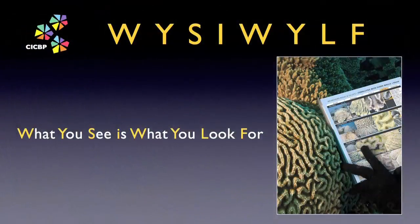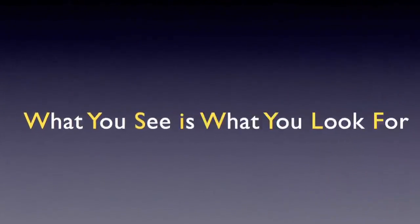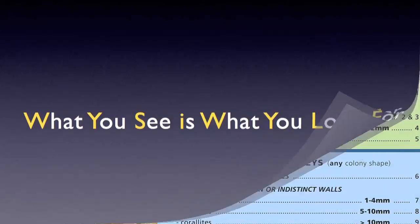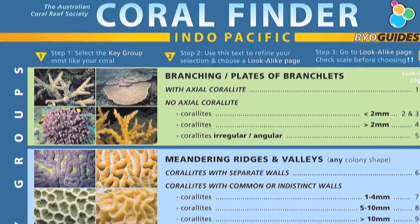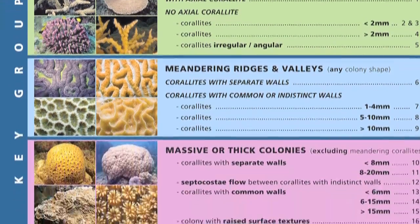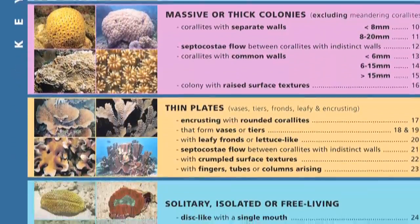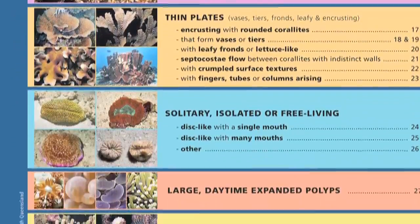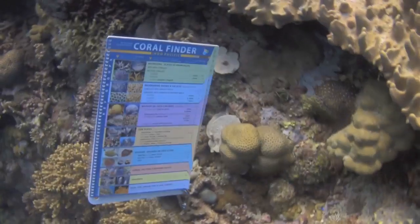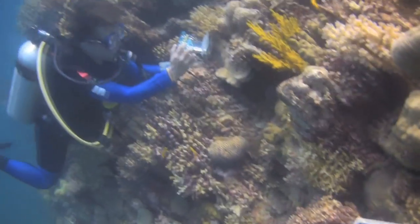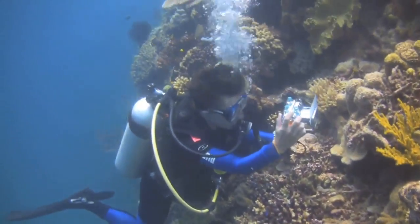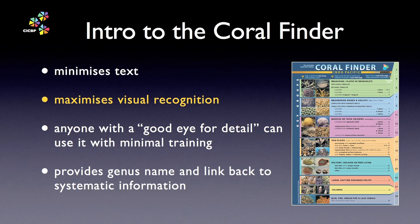I call the principle 'whizzywilf' — what you see is what you look for. As a visual decision tool, the Coral Finder has characteristics that are advantageous when compared to the traditional dichotomous key used by scientists. This overcomes the problem of assumed knowledge and the great big Latin words that get in the road of learning for the beginner. Instead, the Coral Finder relies on visual recognition, which means anyone with a good eye for detail can make quick progress with minimal training.